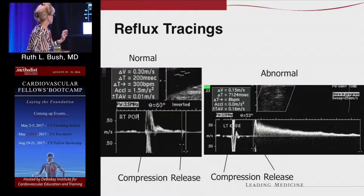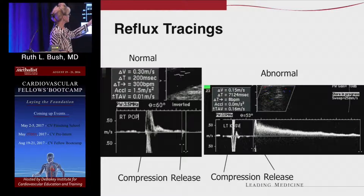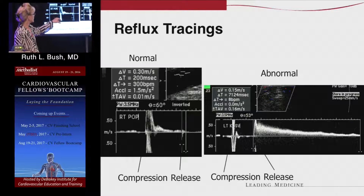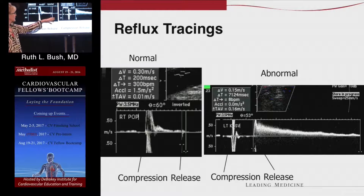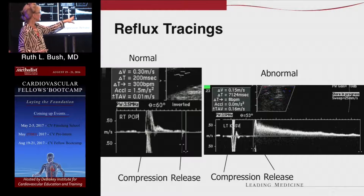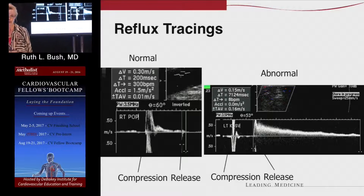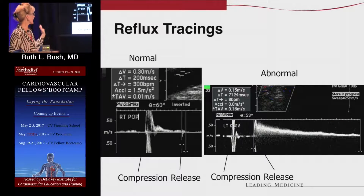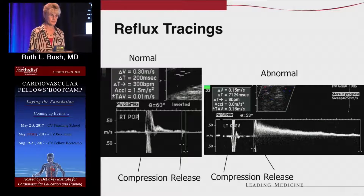For a normal venous scan: you place the ultrasound probe on someone's thigh looking at their saphenous vein, squeeze their calf, and you'll see a little bit of reflux as the valves are closing, because there is some closing time. Blood shoots through the valve and then it closes. When you have reflux, you squeeze and you'll see blood flowing for longer — and that's how we measure it, by the duration on the ultrasound scan.